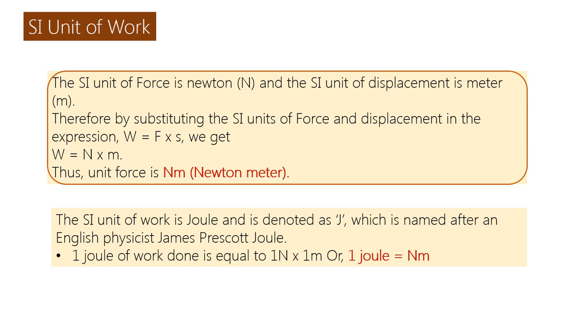SI unit of work. The SI unit of force is Newton N and the SI unit of displacement is meter M. Therefore, by substituting the SI units of force and displacement in the expression W equals F times S, we get W equals N times M. Thus, unit force is Nm, Newton meter. The SI unit of work is Joule and is denoted as J, which is named after an English physicist James Prescott Joule. One Joule of work done is equal to 1N times 1M, or 1 Joule equals Nm.